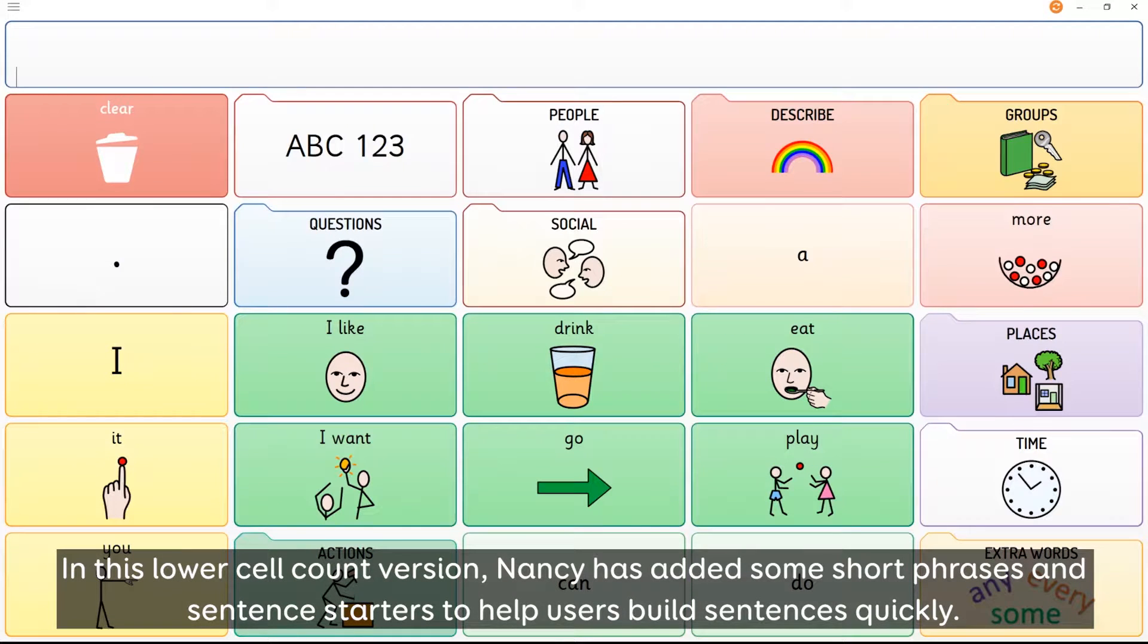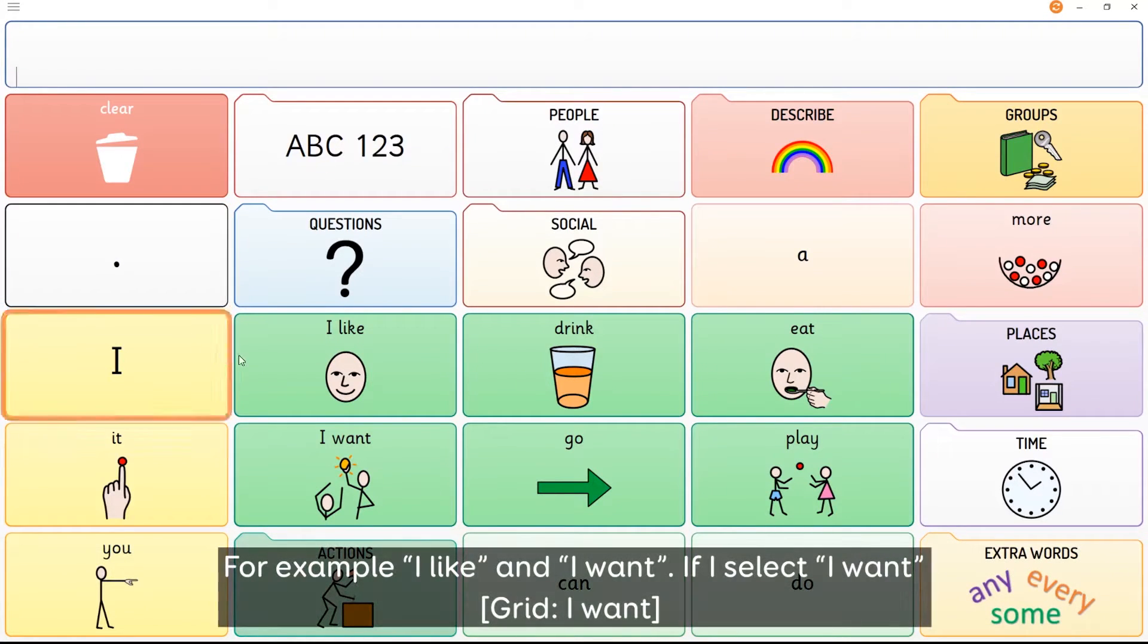In this lower cell count version, Nancy has added some short phrases or sentence starters to help users build sentences quickly. For example, I like and I want.